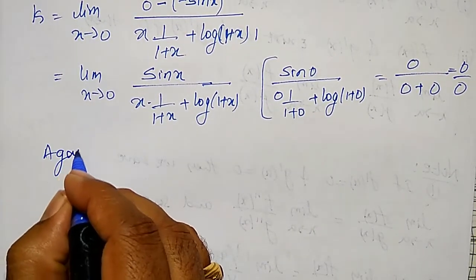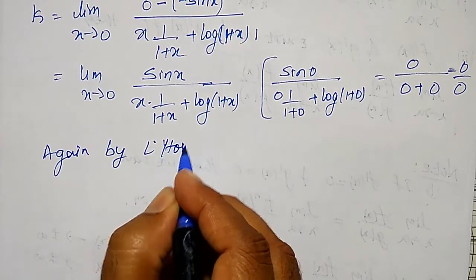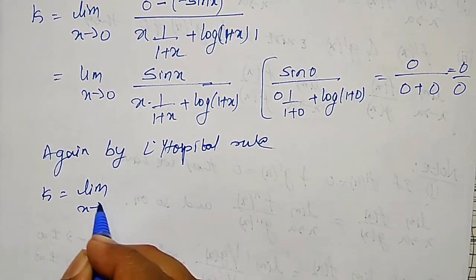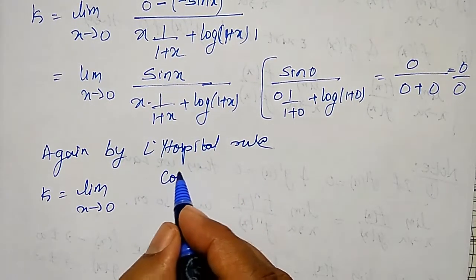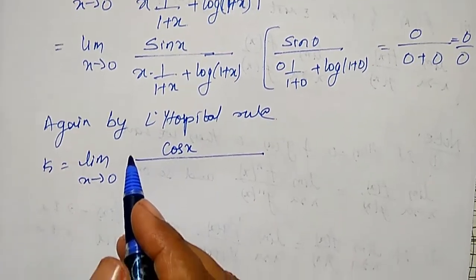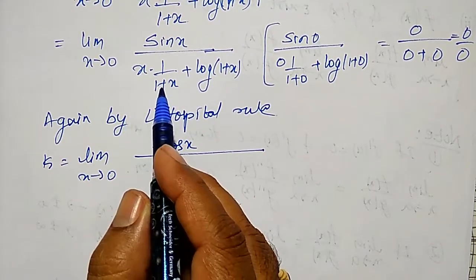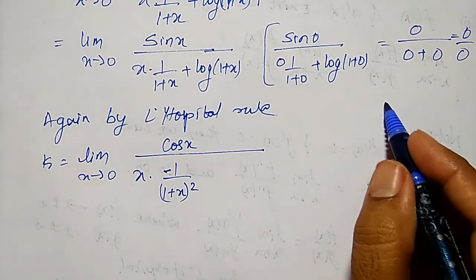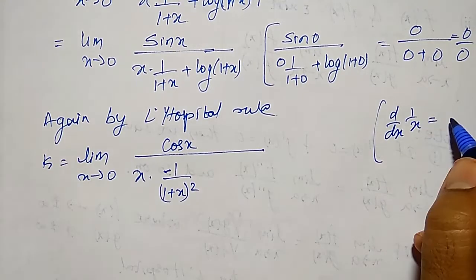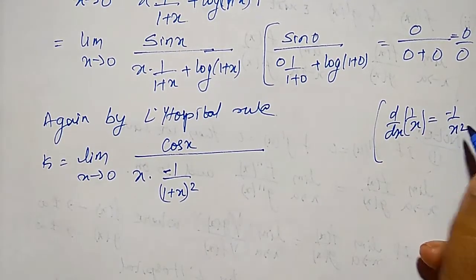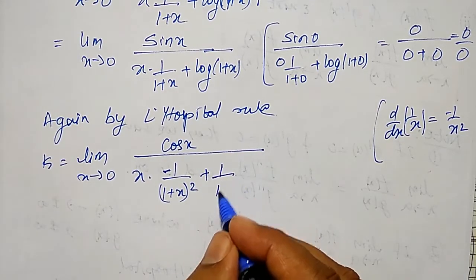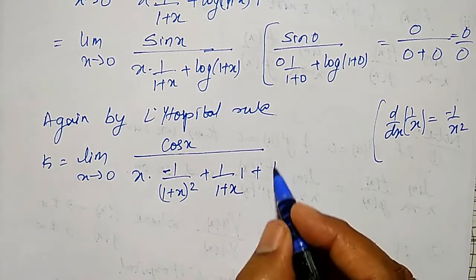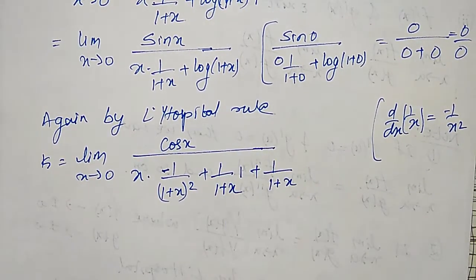Again by L'Hôpital's rule, k equals the limit as x tends to 0. The differential of the numerator: sin x becomes cos x. For the denominator, differentiating x·(1/(1+x)) using the product rule gives x·(−1/(1+x)²) plus 1/(1+x), and the differentiation of log(1+x) gives 1/(1+x). So the denominator becomes x·(−1/(1+x)²) plus 1/(1+x) plus 1/(1+x).